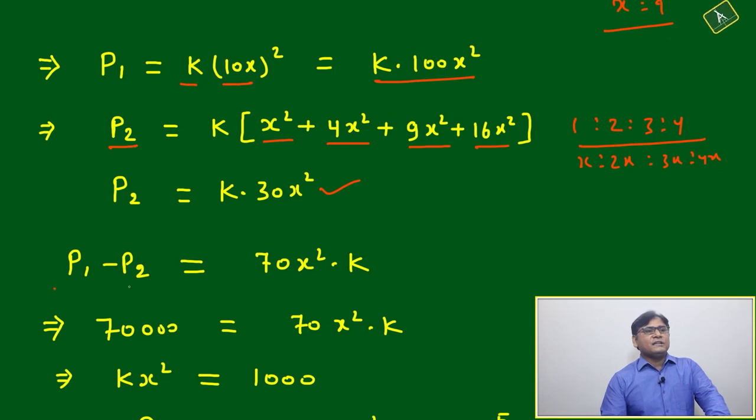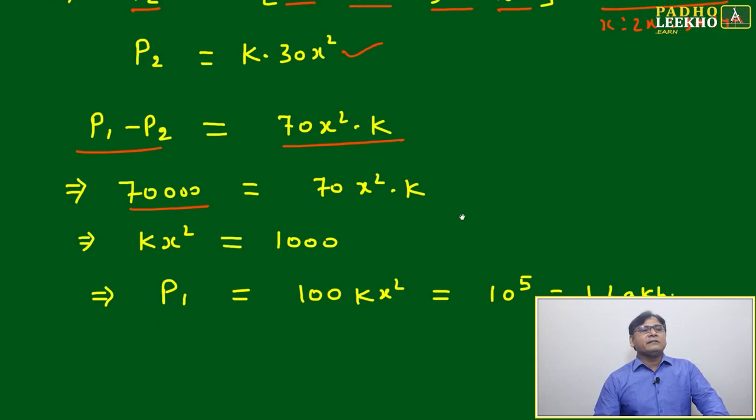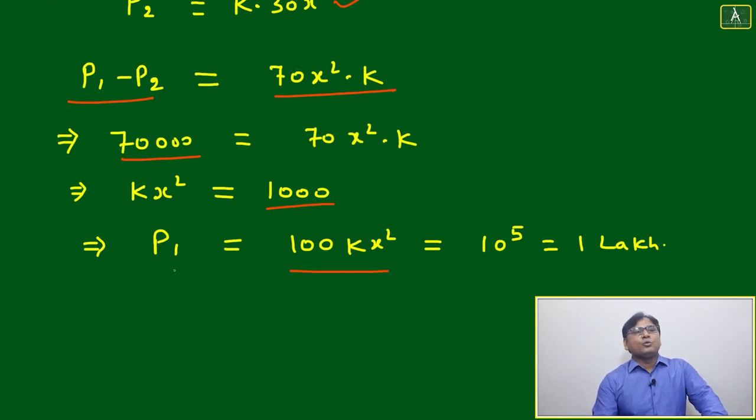Difference P₁ minus P₂ is 100 minus 30, it will become 70x²k. This difference is given in the question as 70,000.